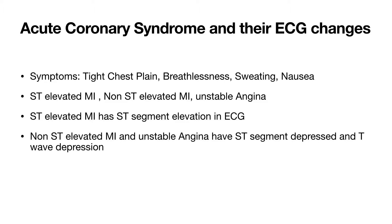If a patient presents with chest pain suggestive of acute coronary syndrome, with key features like tight central chest pain — usually severe and longer lasting than angina — breathlessness, nausea, vomiting, and sweating, then ask for history of previous angina, myocardial infarction, or any other form of vascular disease such as stroke, TIA, or peripheral vascular disease, and assess cardiovascular risk factors. An urgent ECG is a must.